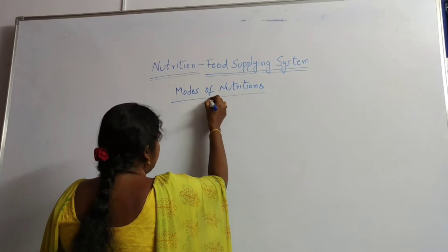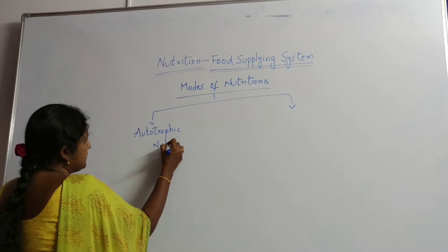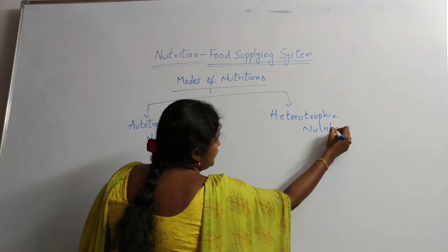First one is autotrophic nutrition and the second one is heterotrophic nutrition. What are the two modes of nutrition? Autotrophic nutrition and heterotrophic nutrition.